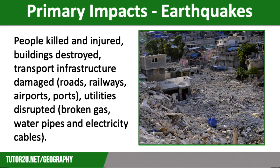Primary impacts also include buildings being destroyed, such as homes, businesses, schools and hospitals, as well as transport infrastructure, such as roads cracking, railway lines buckling or being blocked by debris, and ports and airports being damaged. We also have damage to utilities, such as water pipes and gas pipes being ruptured in the earthquake, and electricity cables coming down as the ground swallows up electricity posts.